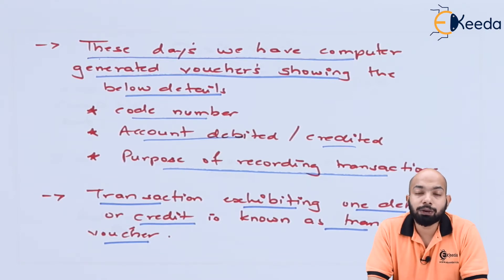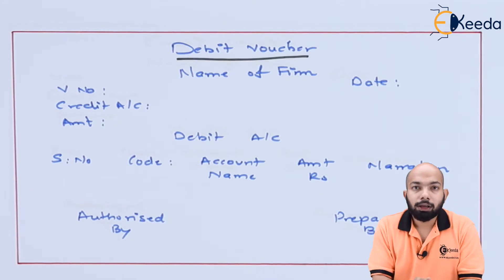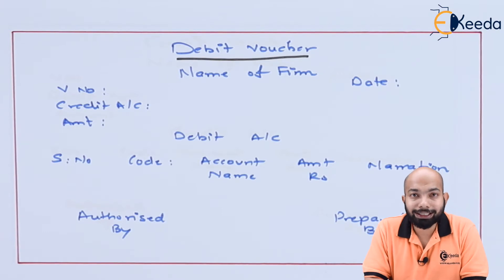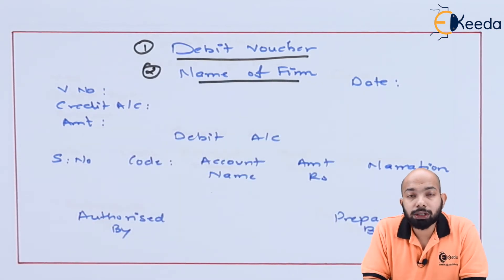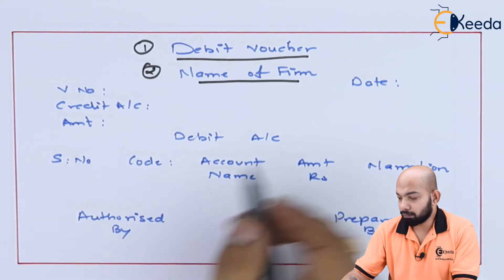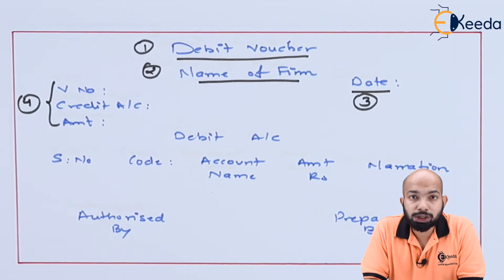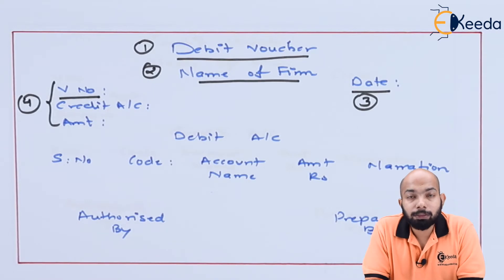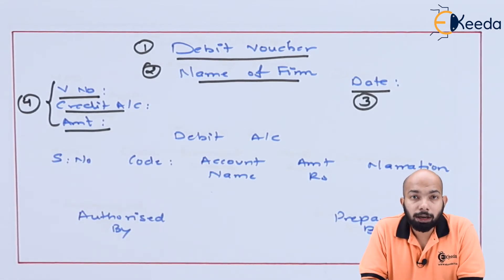Now let's look at the format of a debit voucher. The headline is the first thing mentioned when creating a debit voucher. The second thing is the name of the firm creating the voucher — it's important to know who the supplier is. The third item is the date when the invoice was generated. The fourth item is the voucher number, that is the code, followed by the credit account — the person to whom it is supplied — and the amount of that specific transaction.